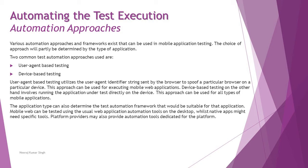In general, there are two common test automation approaches: user agent based testing and device based testing. User agent based testing utilizes the user agent identifier string sent by the browser to spoof a particular browser on a particular device. This approach can be used for mobile web applications. Device based testing, on the other hand, involves running the application directly on the device, and this approach can be used for all types of mobile applications.